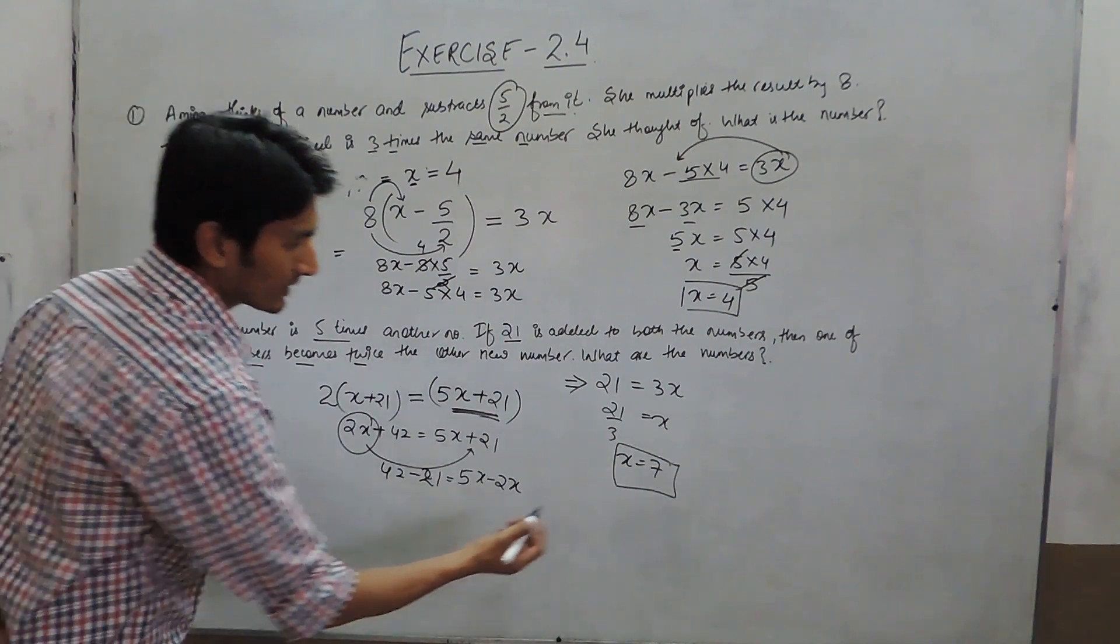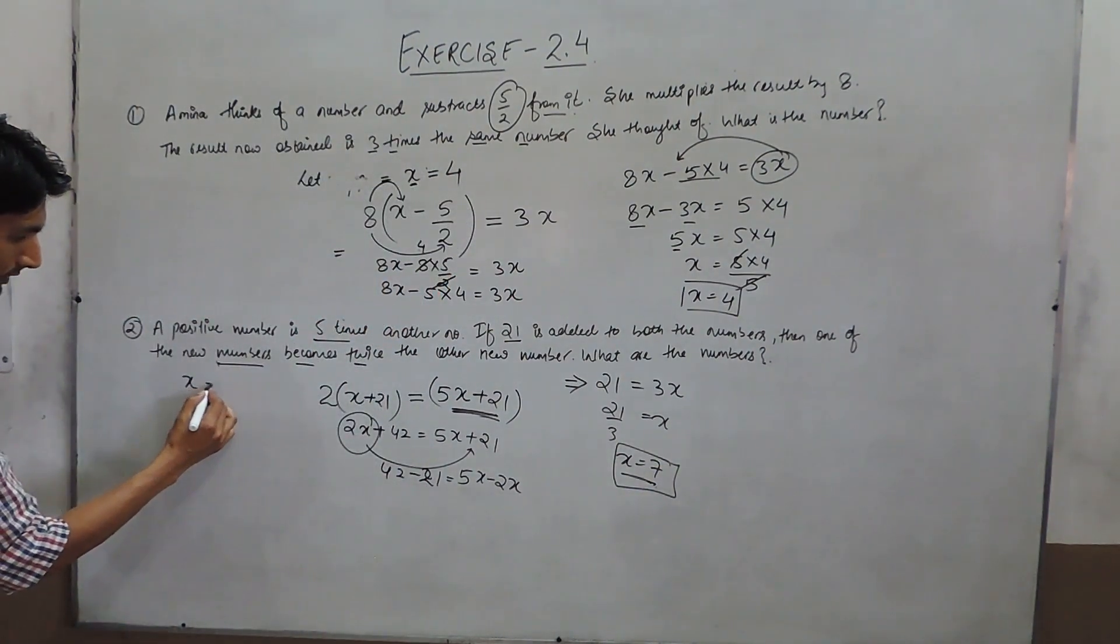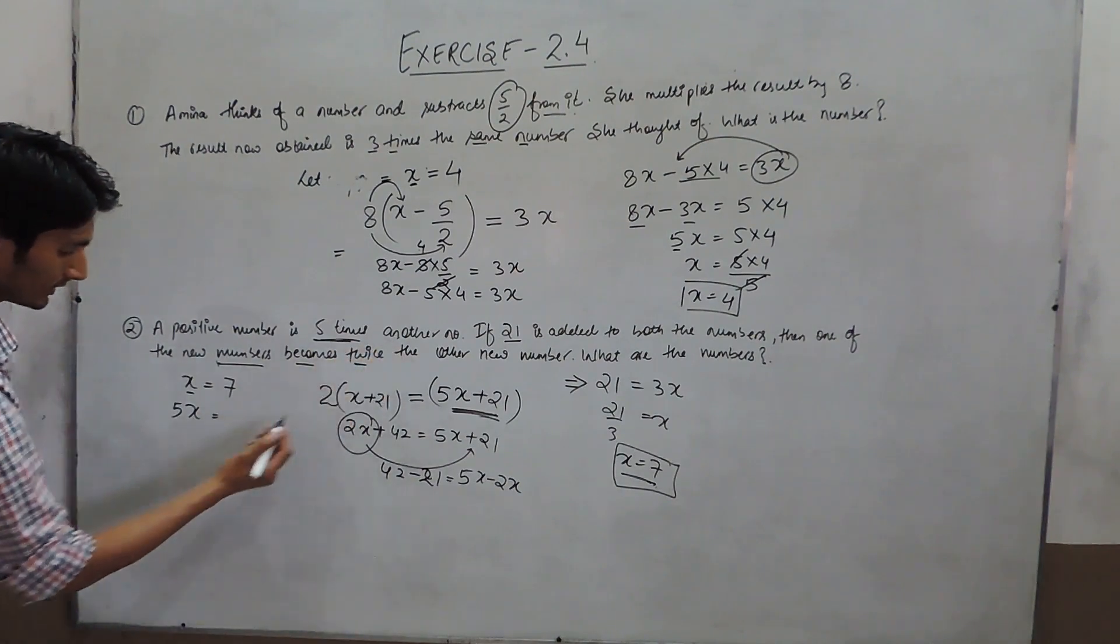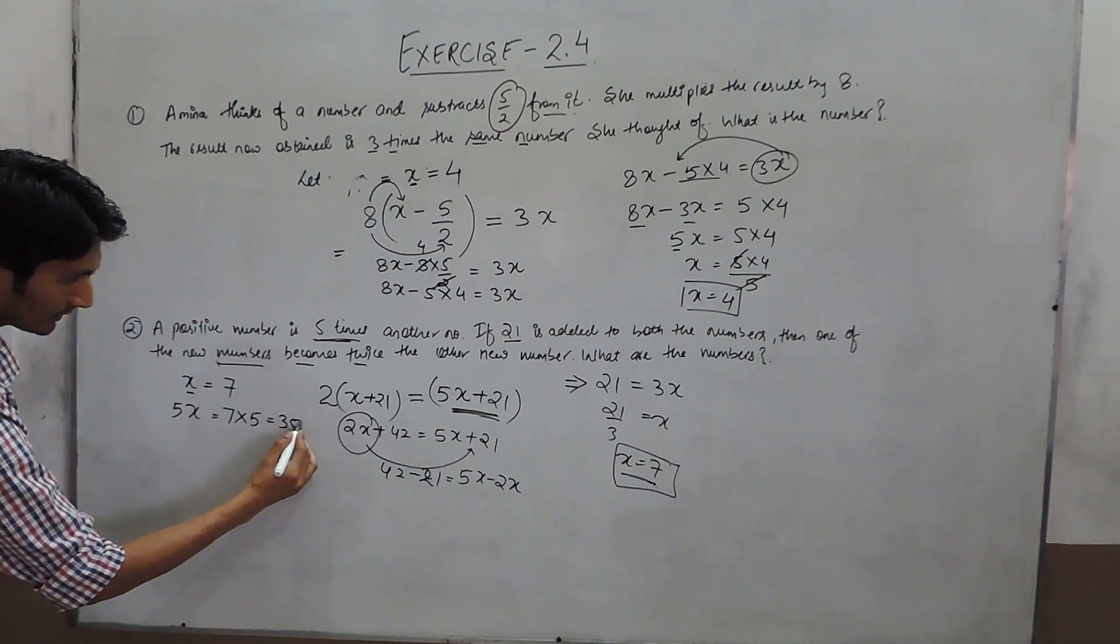So x equals 7. The first number should be 7 because the first number was x, and the other number was 5x. Since it was 5 times the other, the second number must be 35.